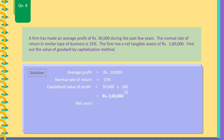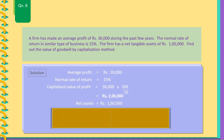Net assets equal Rs. 2 lakh minus Rs. 1,60,000, giving goodwill of Rs. 40,000.